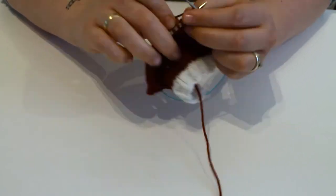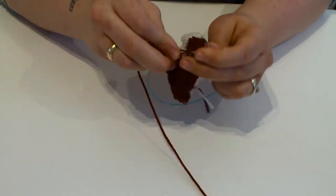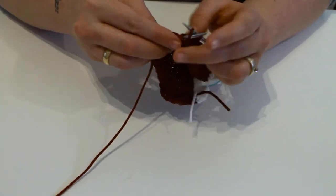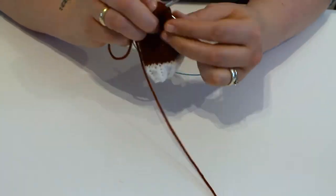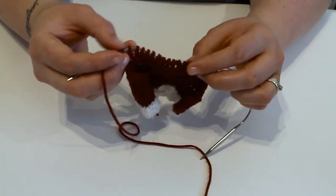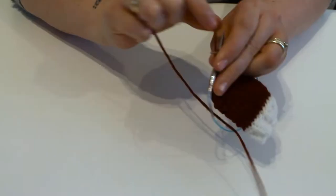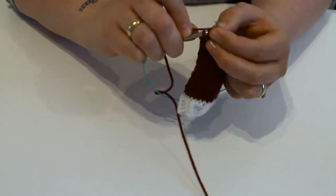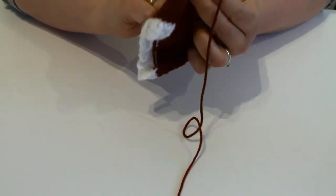After 10 rows of decreasing on my knit side, on the right side, I began doing a decrease on the wrong side as well. On the right side it's knit two together, knit the row, knit two together. And when you flip it, purl two together, purl the row, purl two together. This speeds up the increase and creates less of a point, but creates that Santa hat shape.